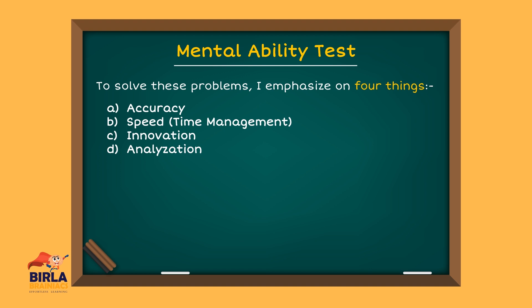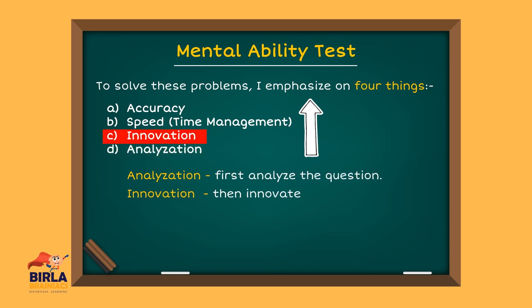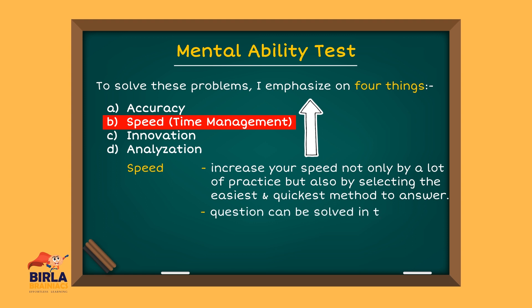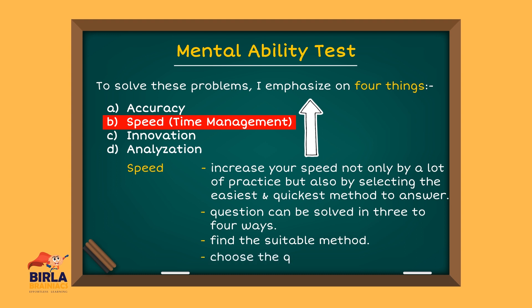Let's look at each one of them. We will go from D to A rather than A to D to understand the steps better. The first step is to analyze, then innovate the rules to follow. You have to increase your speed not only by a lot of practice but also by selecting the easiest and quickest method to answer. A question can be solved in three to four ways, and you have to find out which method is the most suitable for you. All the methods will give you the right answer, but you have to decide which is the quickest.